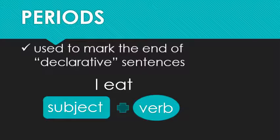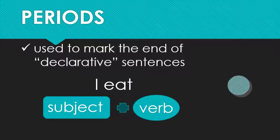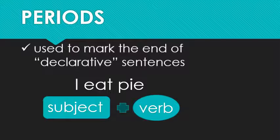So, let's give it a try. We'll start basic. I eat. Well, I is my subject. Eat is my verb. That's a sentence, right? I eat pie. Oh, these sentences just keep getting better and better. I again, subject, eat again, verb. Okay, it's a sentence.